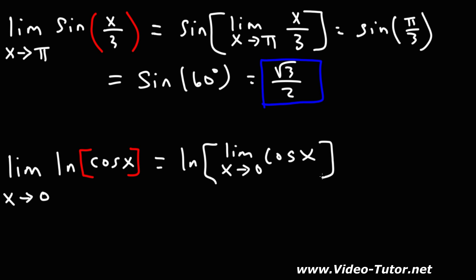Cosine of 0, we know it's 1. And as you approach 0 from the right side or from the left side, it will still be 1. Cosine of positive 0.01 is approximately positive 1, and cosine of negative 0.01 is still approximately positive 1. So using direct substitution, we get cosine of 0 is 1, and we know the natural log of 1 is 0.